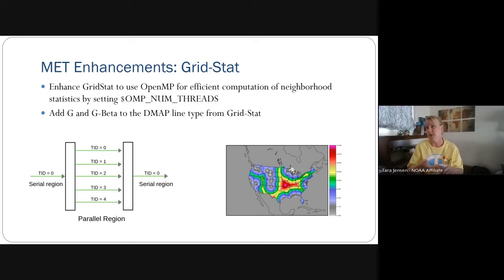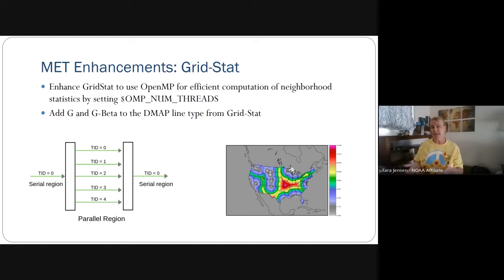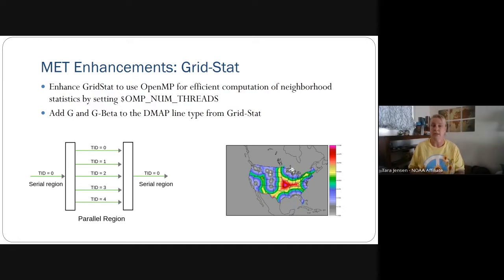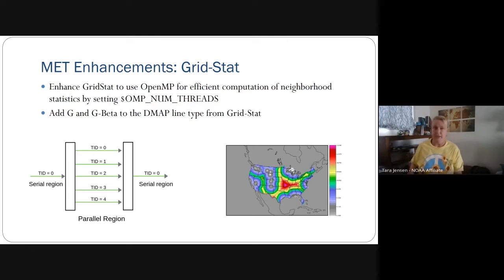Tools targeted for this optimization include series analysis, ensemble stat, probably point to grid, mode, and mode time domain. Also in grid stat, there's already a distance map line type from previous versions. We integrated the computation of two new diagnostics called G and G beta, developed by Eric Gilliland, a statistician at NCAR.